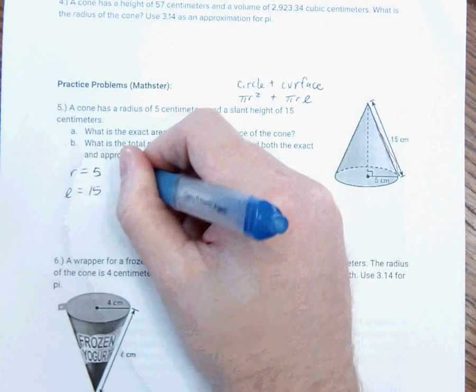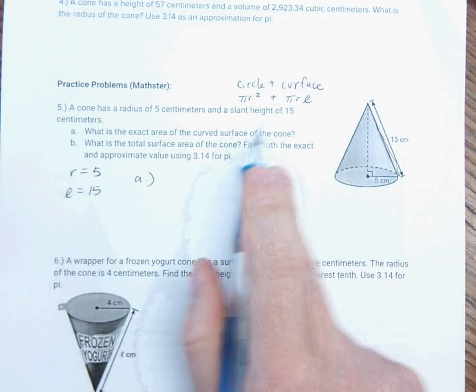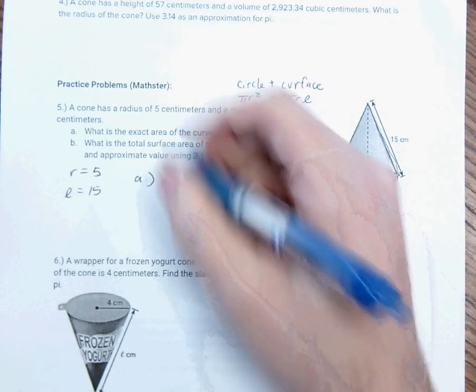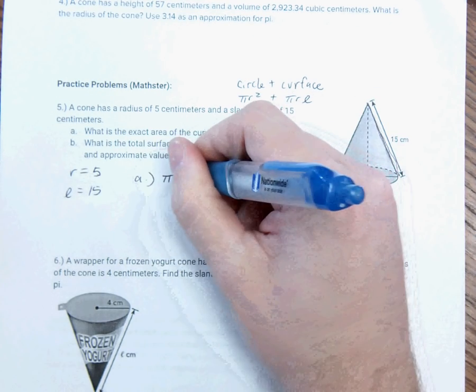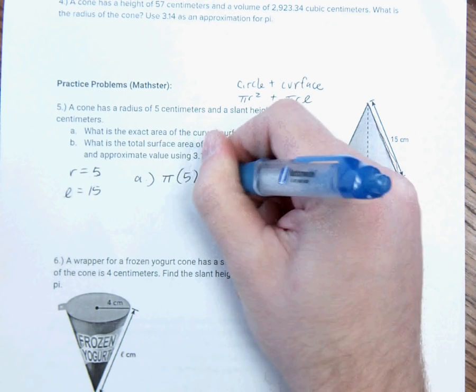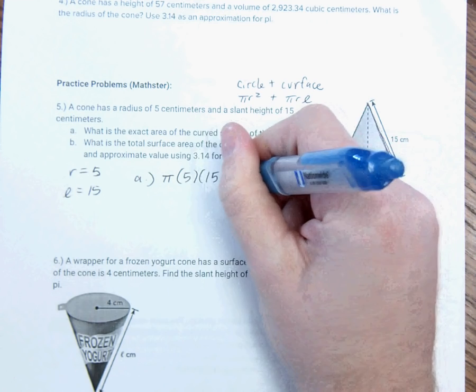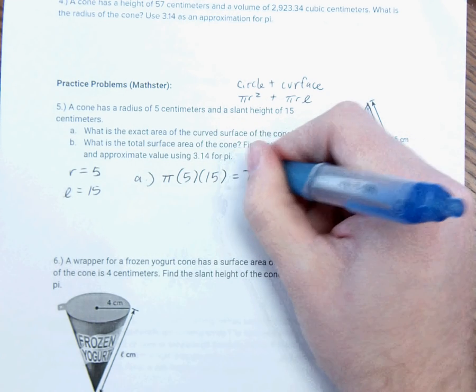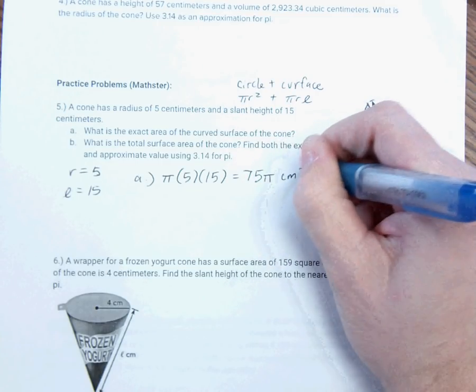So, since I know R is 5 and L is 15, the exact area of the curved surface, if it ever says exact, I don't mess around with pi. So, pi is just going to be there. Pi times 5 times 15. So, 5 times 15 is 75. I don't want to mess with pi. So, this just becomes 75 pi. So, 75 centimeters squared.